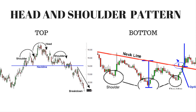On the technical analysis chart, the head and shoulders formation occurs when a market trend is in the process of reversal, either from a bullish or bearish trend. There are mainly two types of the head and shoulders pattern: head and shoulders top, and head and shoulders bottom.